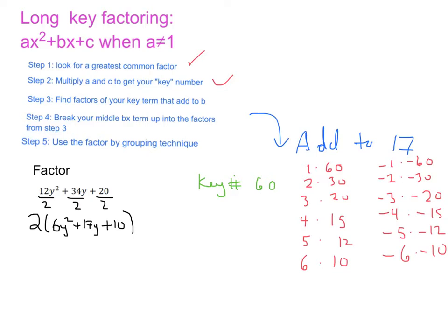Now we want to find the ones that add to negative 17. So the ones that add to negative 17 are going to be, this is 61, this is 32, this is 23, 4 plus 15 is 19, 5 plus 12 is 17. So we can see that 5 and 12 are going to be our factors, so we found our factors that add to b.